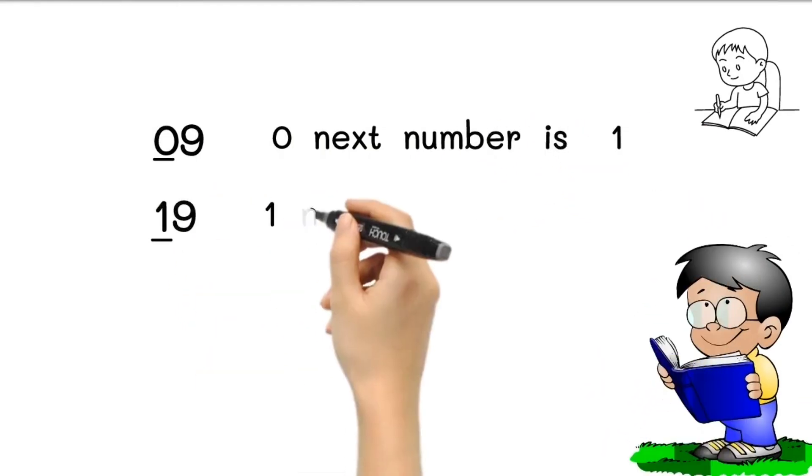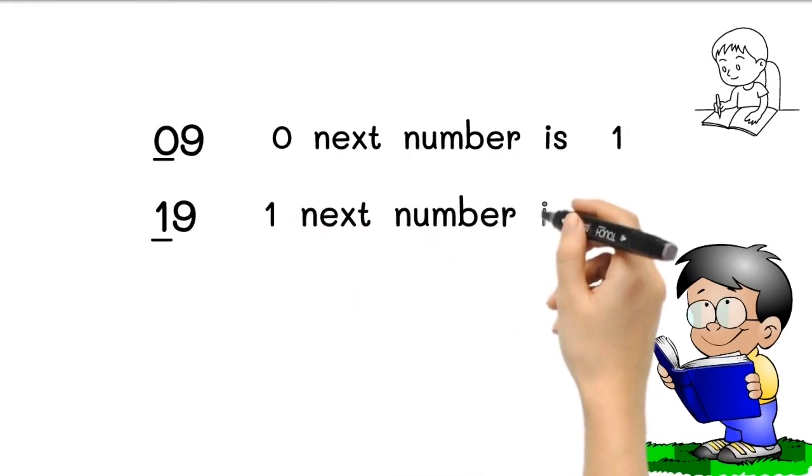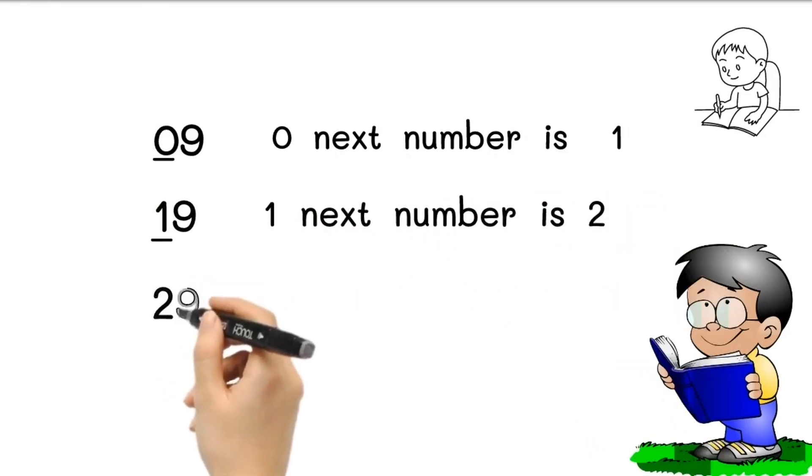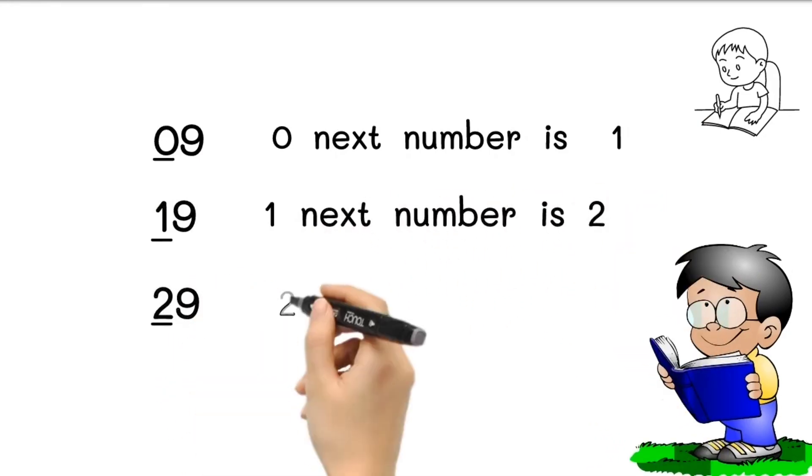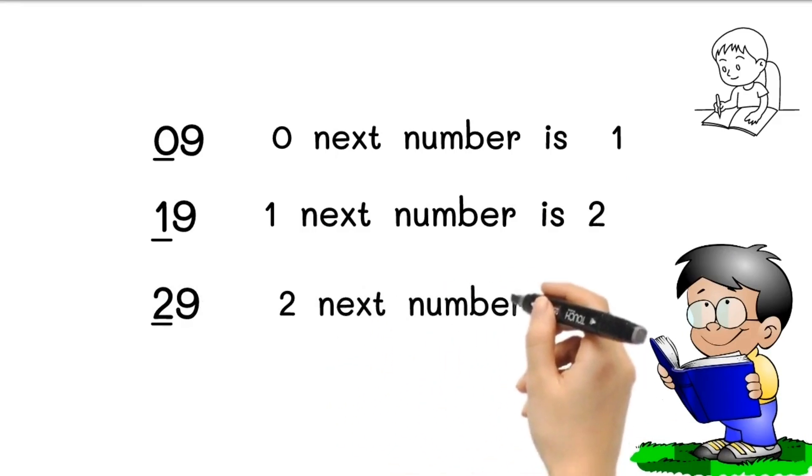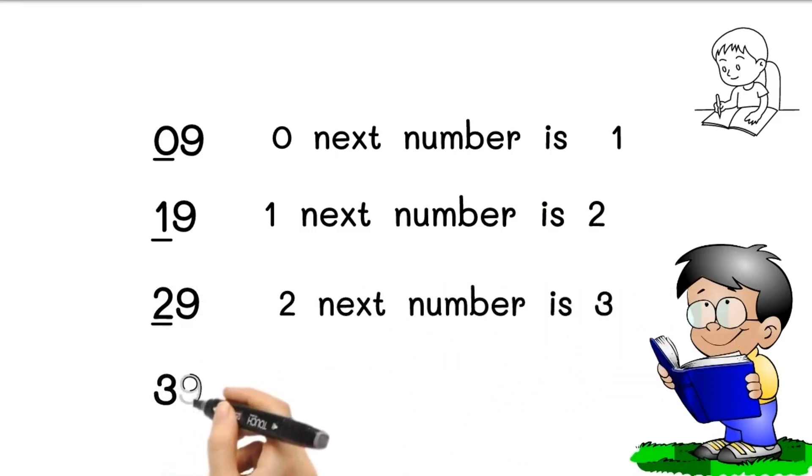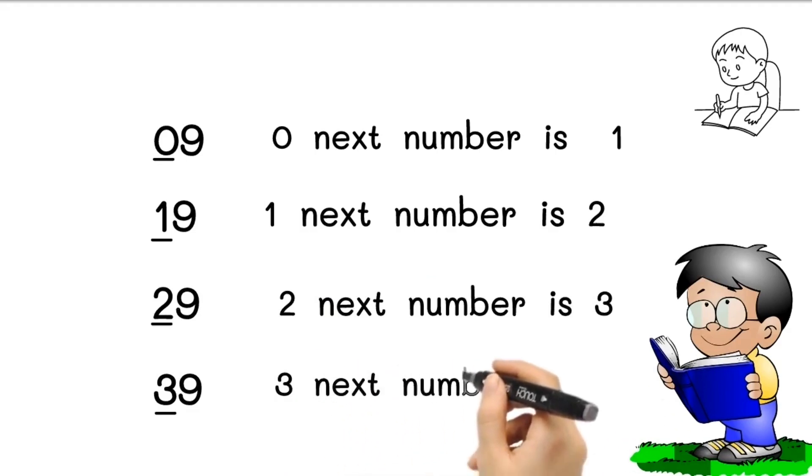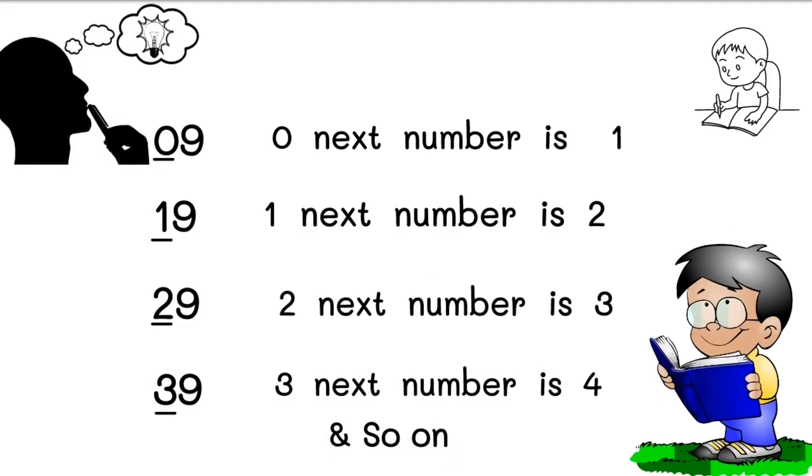For 19, tens digit is 1, so next number of 1 is 2. For 29, tens digit is 2, so next number of 2 is 3. For 39, tens digit is 3, and the next number of 3 is 4. So in this way you can find out next number of every tens digit number which ends with 9.